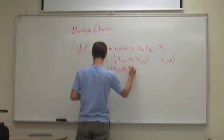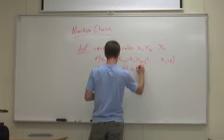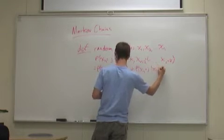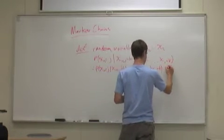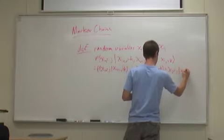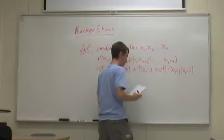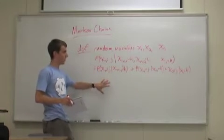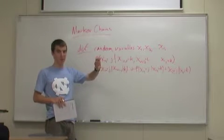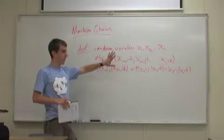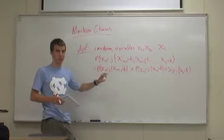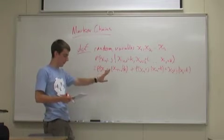Also, the probability that xn equals j given xn-1 equals k is equivalent to the probability that x2 equals j given x1 equals k. So all this really means is that the probability of something happening down the line has absolutely no effect on the probability of something that happens at the beginning. The probabilities aren't going to change because of something that happens further down the line.